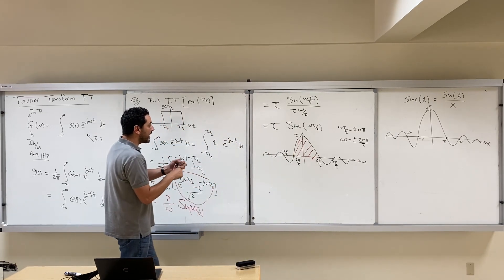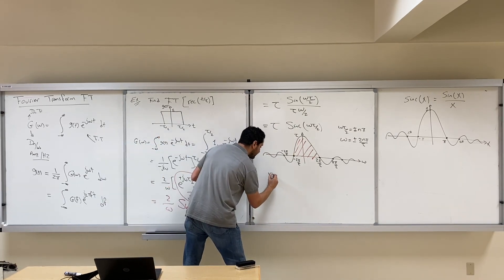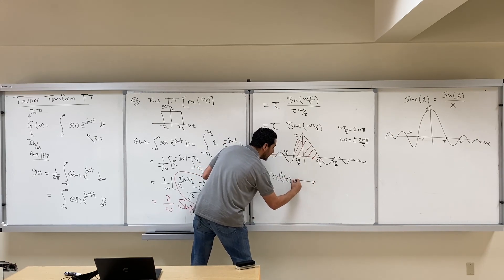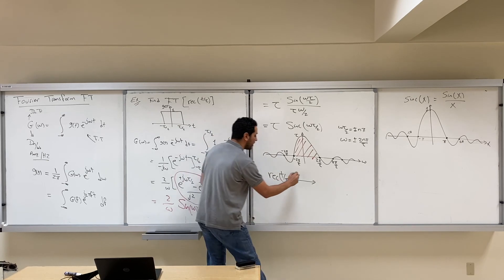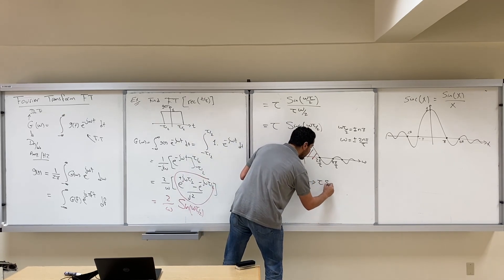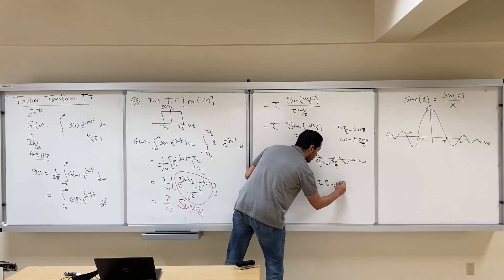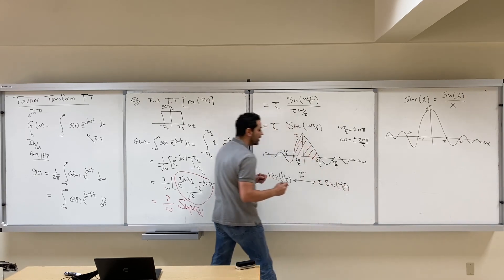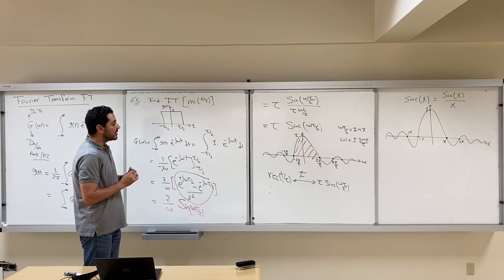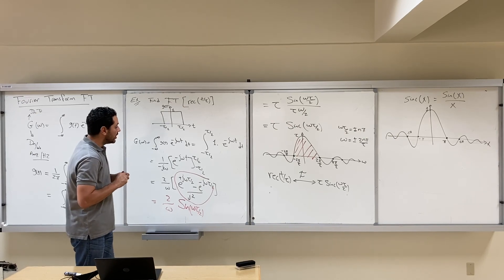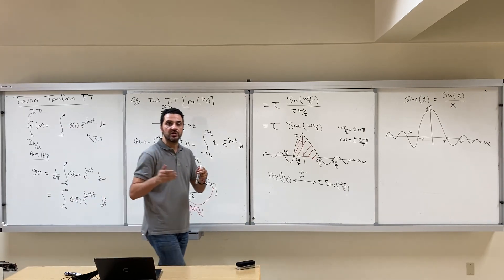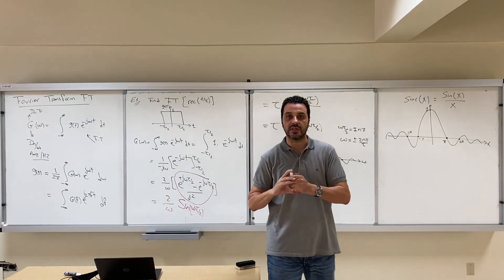So we can write that rect(t/τ) has a Fourier transform of τ sinc(ω τ/2). This is an example of how to use integration to calculate the Fourier transform of a given function. We will stop here in this video, and in the next video we will discuss some of the properties of Fourier transform.